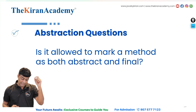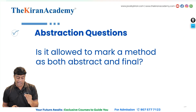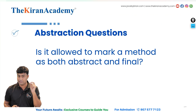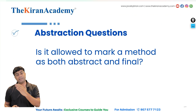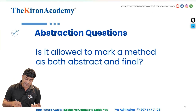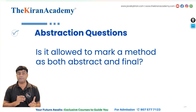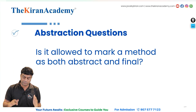Is it allowed to mark a method as both abstract and final? The answer is no. Abstract means you need to implement it in a subclass; final means you cannot override it. There is a conflict between these two, so this combination is not possible.